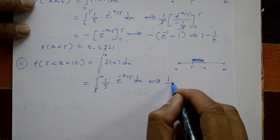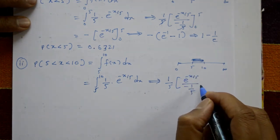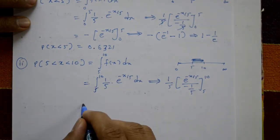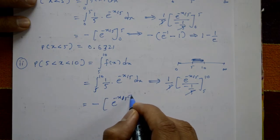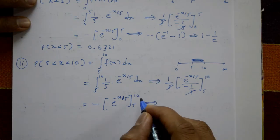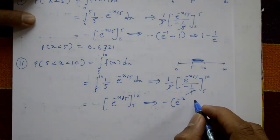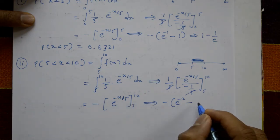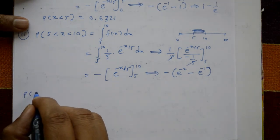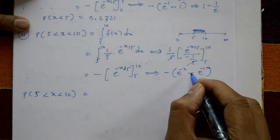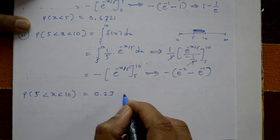After integration, 1/5 is constant. Integrating e^(−x/5) gives e^(−x/5) divided by (−1/5), with limits 5 to 10. The 5's cancel, leaving minus e^(−x/5) from 5 to 10. Applying the upper limit x = 10: e^(−2). Minus the lower limit x = 5: e^(−1). Therefore, P(5 < X < 10) = 0.2325. This is the required solution.